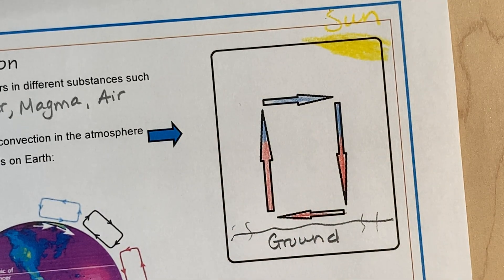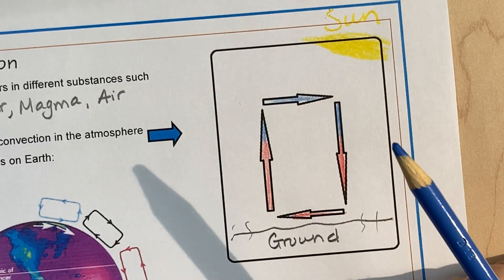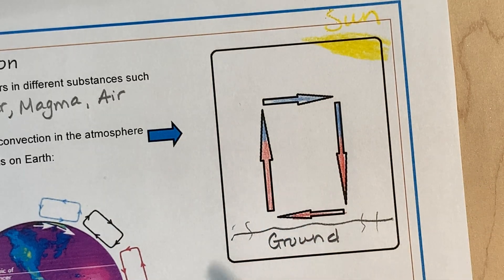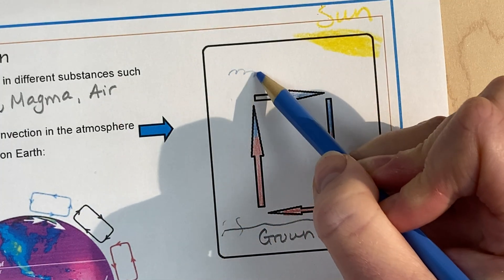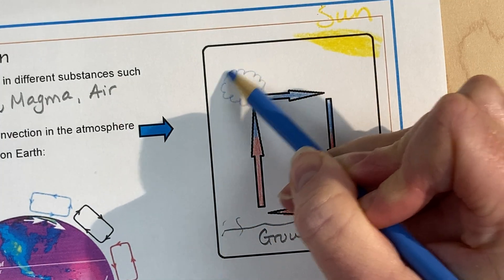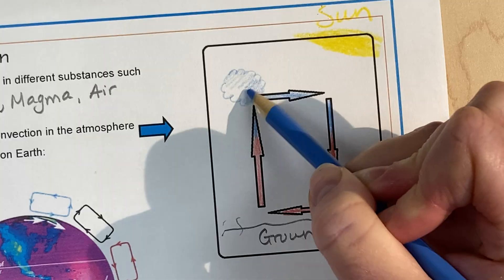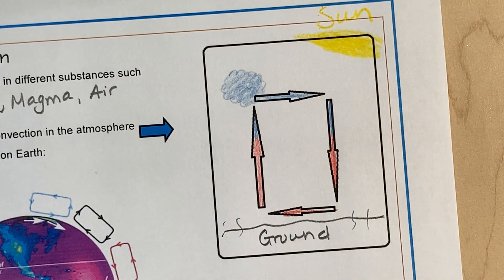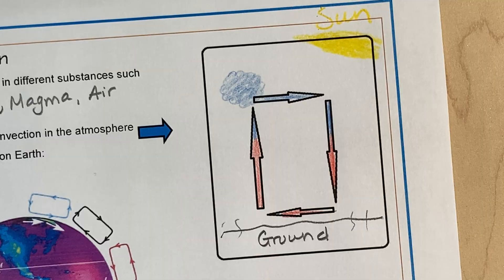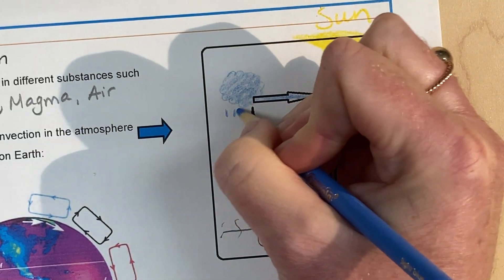Once it cools, colder air can't hold as much water in it. So once it cools in the upper atmosphere, it's going to condense into clouds, and those clouds can't hold as much moisture, so you often end up with a lot of rain.